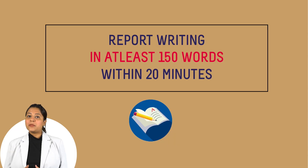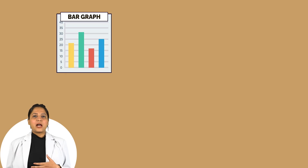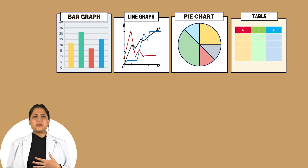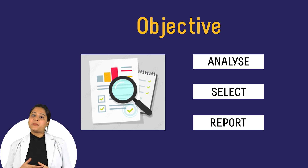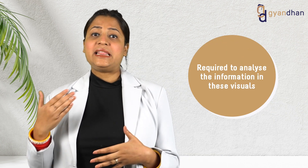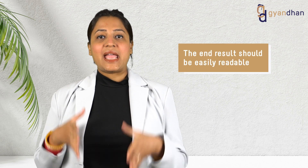In report writing, you are required to select and present key pieces of information from the given visuals. A minimum of 150 words should be written in the task in 20 minutes. The ideal word count is around 170 words. Make sure you don't exceed 200, as that will make your writing too wordy. The visuals you could get in the exam can be in the form of bar graphs, line graphs, pie charts, table, map, process diagram, flow chart, and even a combination graph. These illustrations can vary but the objective remains the same, which is to select and report data. You will be required to analyse the information in these visuals and then express the same in sentences, making sure you present information logically. The end result should be easily readable and should not be missing any key information or highlight.